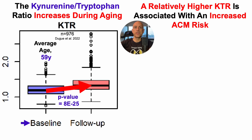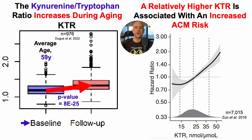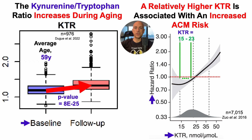The significance of the age-related increase is that a relatively higher KTR is associated with an increased all-cause mortality risk. On the y-axis we have the hazard ratio plotted against the KTR on the x-axis. When the shaded gray region is completely above or below a hazard ratio of 1, we have a significant association. Lowest risk is seen when the KTR is 15 to 23, while a KTR above 25 is associated with increased all-cause mortality risk.